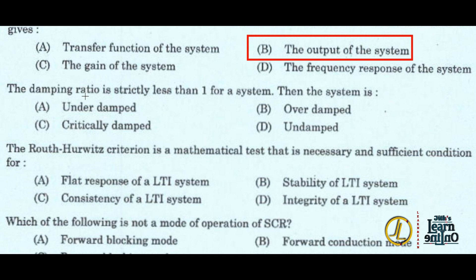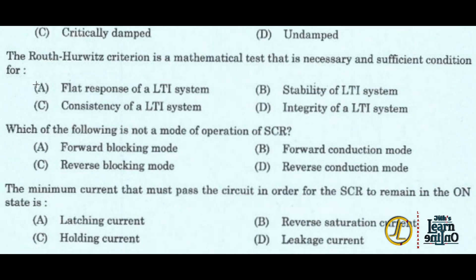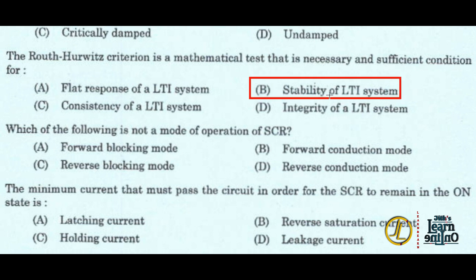If the damping ratio is strictly less than one for a system, then the system is under-damped — option A. Next, the Routh-Hurwitz criterion is a mathematical test that is a necessary and sufficient condition for the stability of an LTI system — it is an LTI system stability measurement technique.